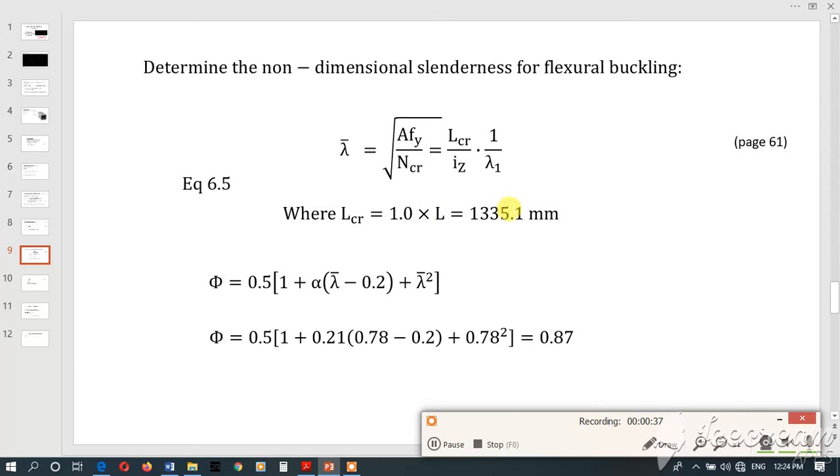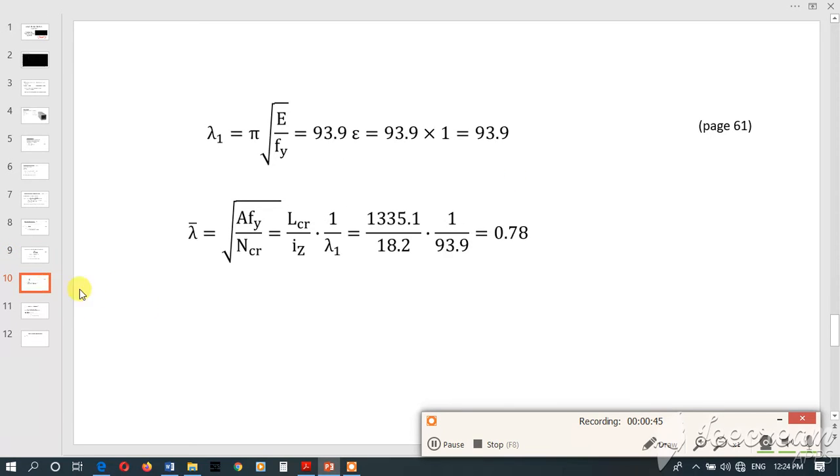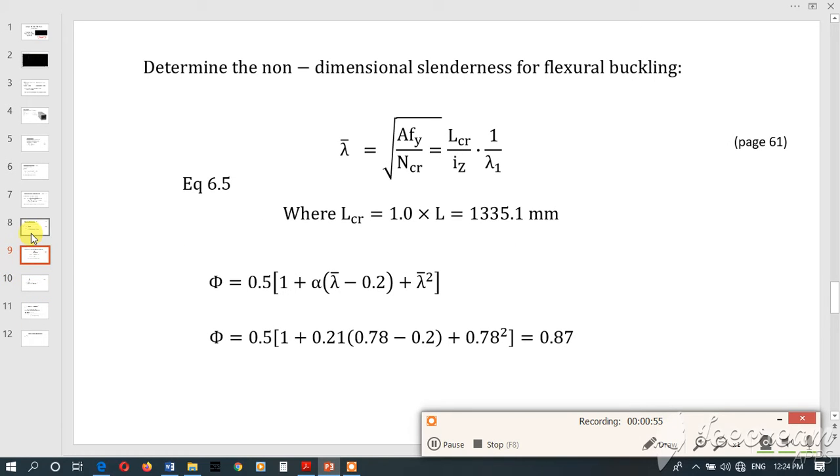LCR is related using this relationship. I said is the radius of gyration. Lambda 1 is calculated using this relationship. So now we know lambda bar, then we could calculate this one.